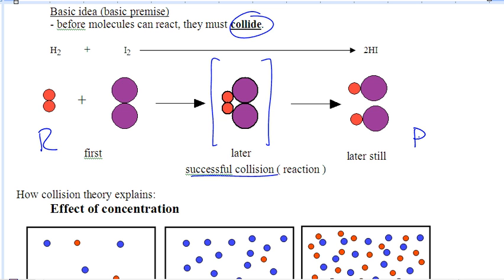We can do things to help reactants collide better. The more often they collide, with more energy, will mean a faster reaction.